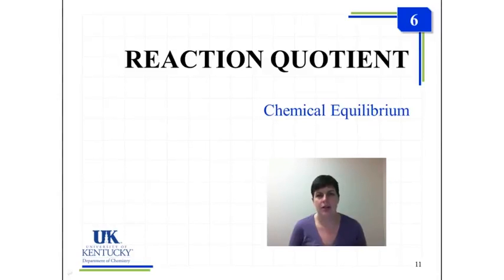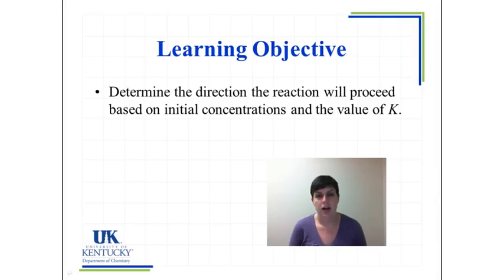In this unit, we will learn to calculate the value of the reaction quotient and determine what it means with respect to a reaction at equilibrium. Our goal is to determine the direction of the reaction by using the concentrations we're given initially and how the value of the reaction quotient Q compares to K.